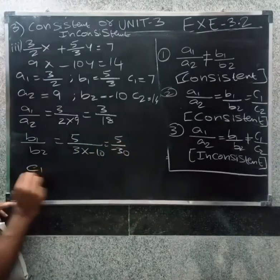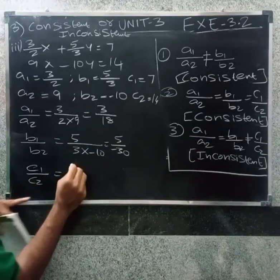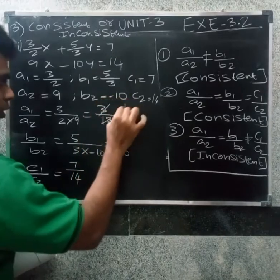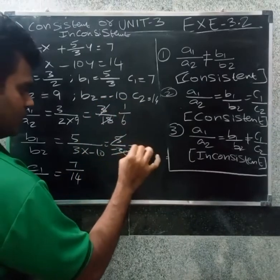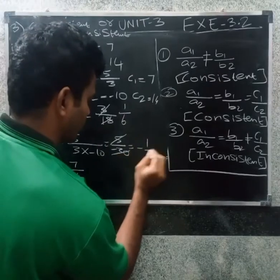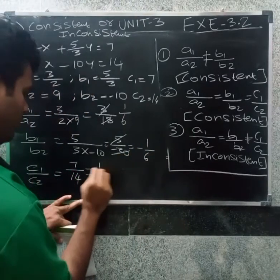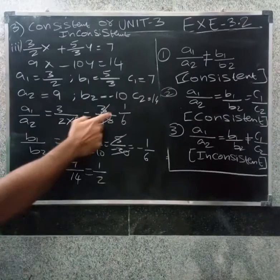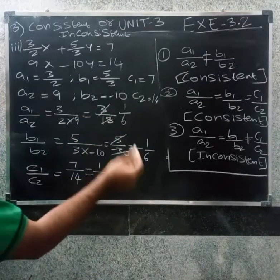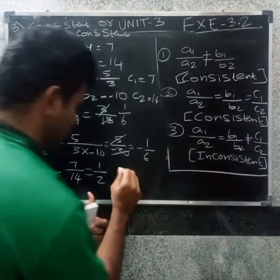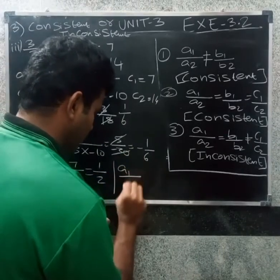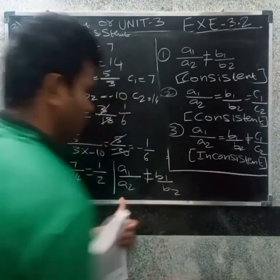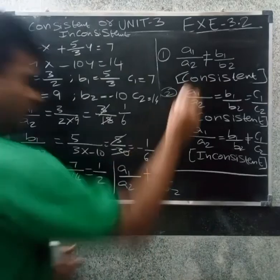C1 by c2 equal to 7 by 14. Cancelling: a1 by a2 gives 1 by 6, b1 by b2 gives minus 1 by 6, c1 by c2 gives 1 by 2. Therefore a1 by a2 is not equal to b1 by b2 due to the minus sign. Therefore a1 by a2 not equal to b1 by b2, so this system is consistent.